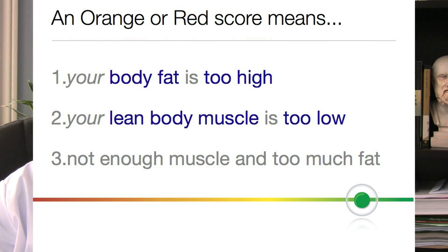Now, if you scored orange or red, then it is reasonable to assume that one of three things are occurring. Either you have too much body fat, or two, you don't have enough lean body muscle or mass, or three, you have a combination of too much fat and not enough muscle.